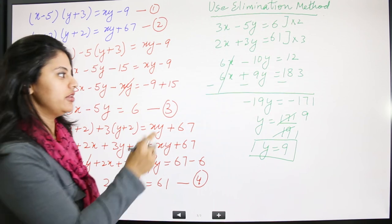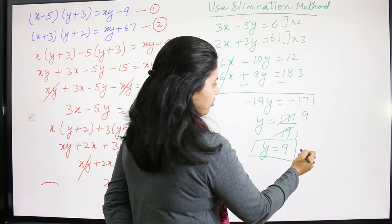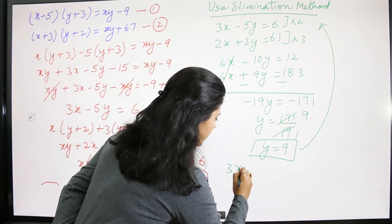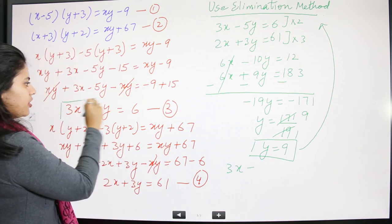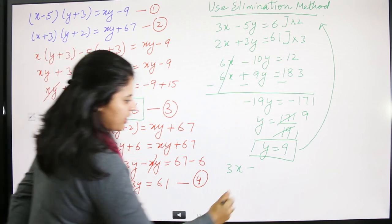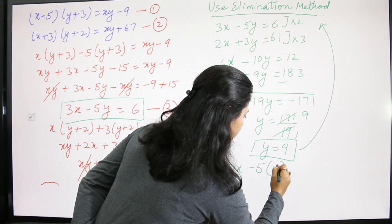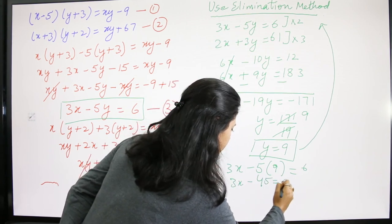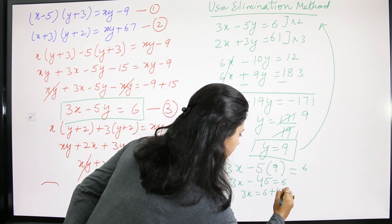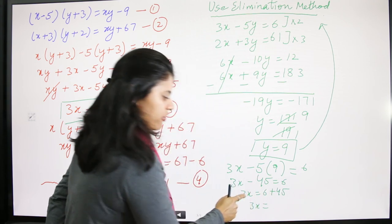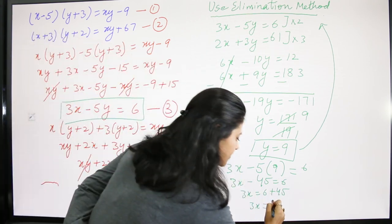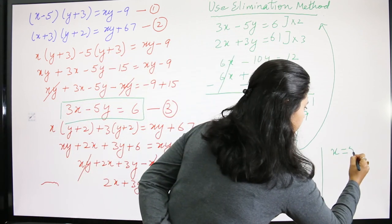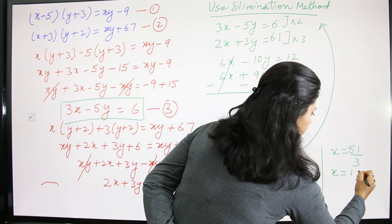Now substitute y = 9 into Equation 3: 3x − 5(9) = 6, so 3x − 45 = 6, giving 3x = 6 + 45 = 51. Therefore x = 51 ÷ 3 = 17.